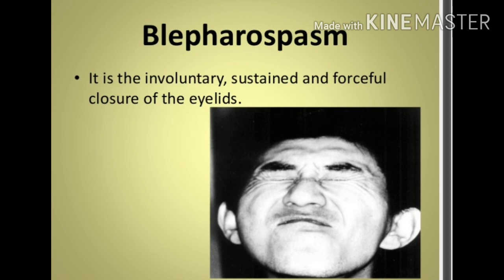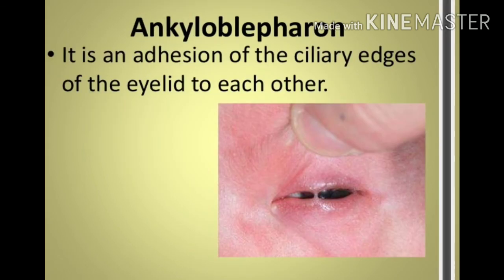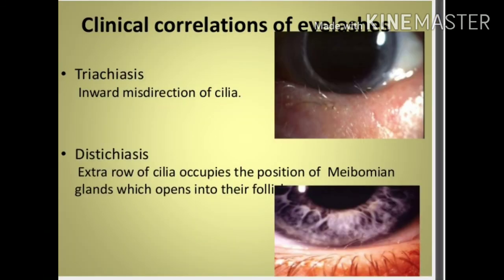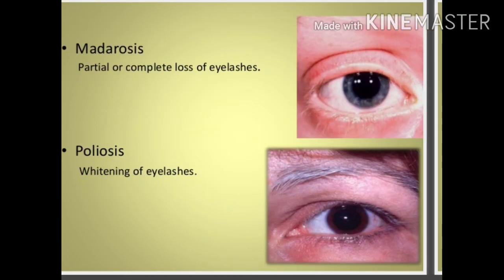Blepharospasm is the involuntary, sustained, and forcible closure of the eyelid. Ankyloblepharon is adhesion of the ciliary edges of the eyelids to each other. Regarding eyelash conditions: trichiasis is the inward misdirection of the cilia, and distichiasis is an extra row of cilia occupying the position of Meibomian glands which open into the hair follicles.